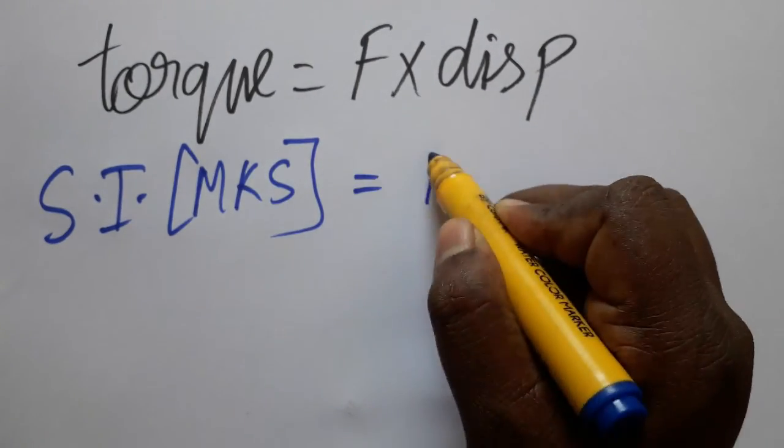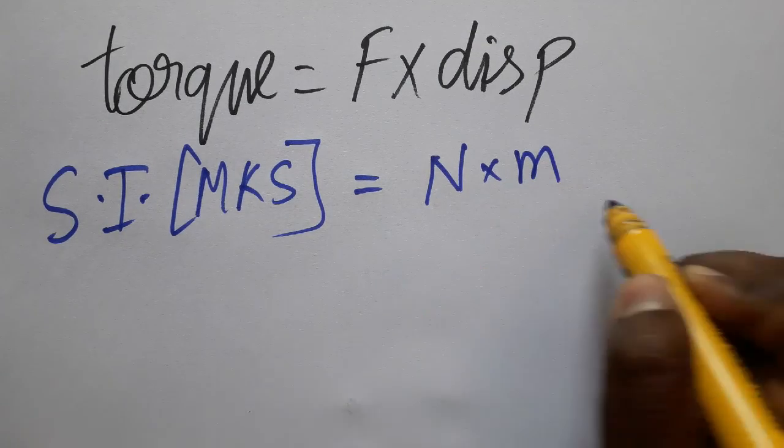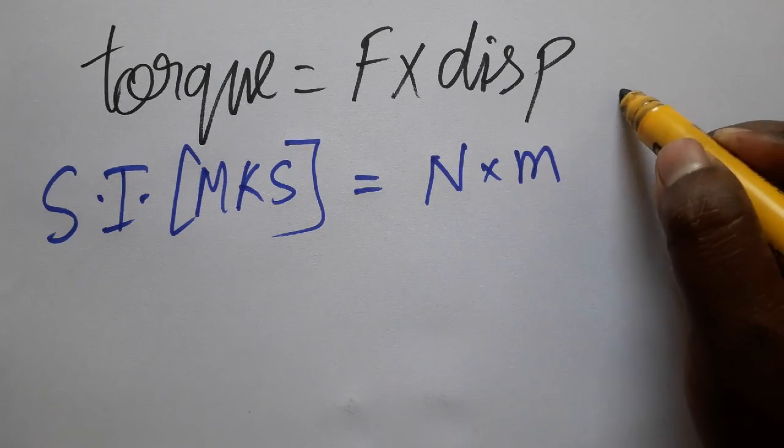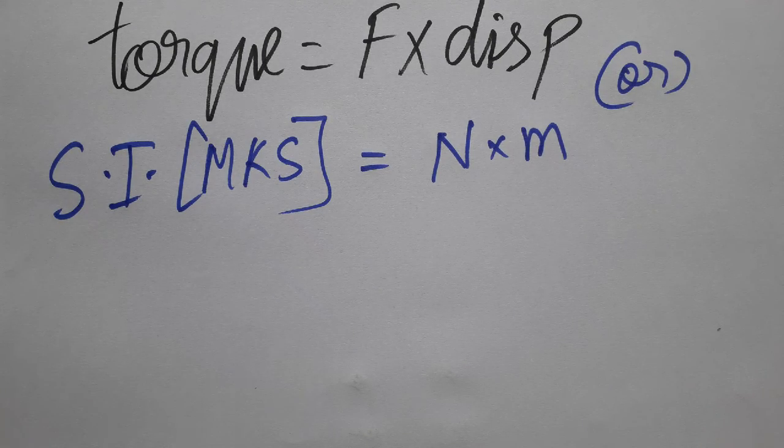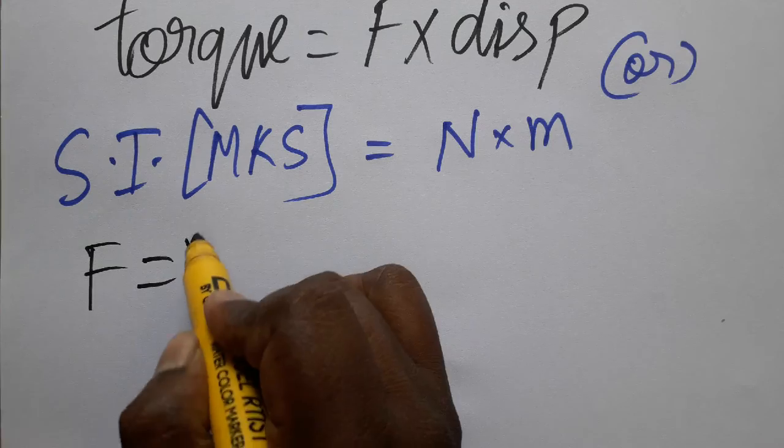For force, the unit is Newton. Displacement SI unit is meter, so Newton meter is one of the units. What is Newton? Force is equal to mass into acceleration, so force equals mass into acceleration.